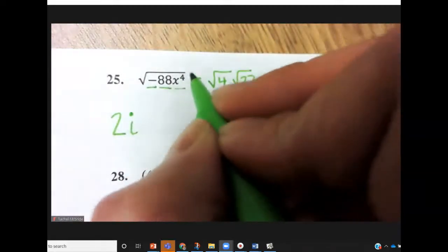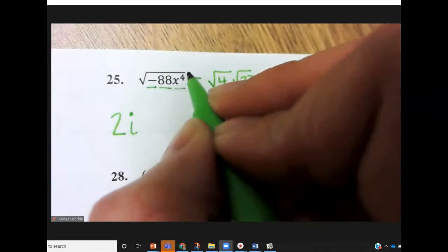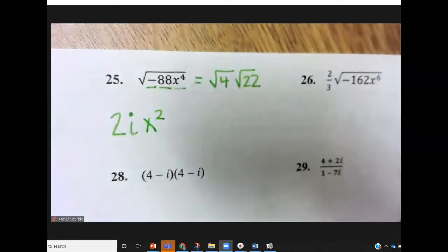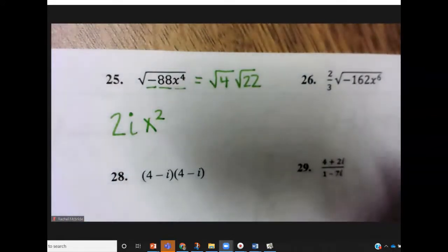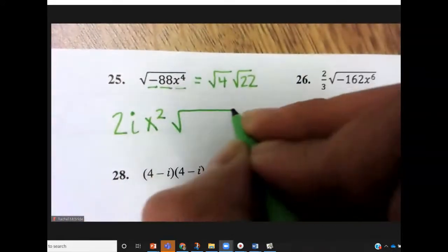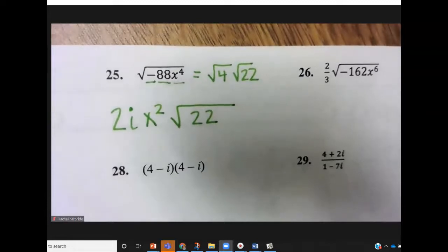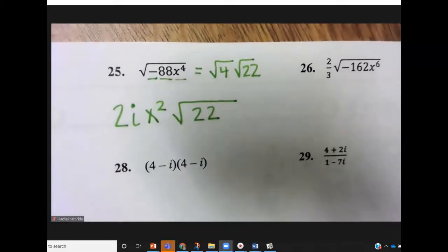x to the 4th is a perfect square. So the rule is you take the 4 divided by 2. So we get x squared. So we have 2i x squared. And then we left behind the square root of 22, which does not divide by any perfect squares or simplify any further.